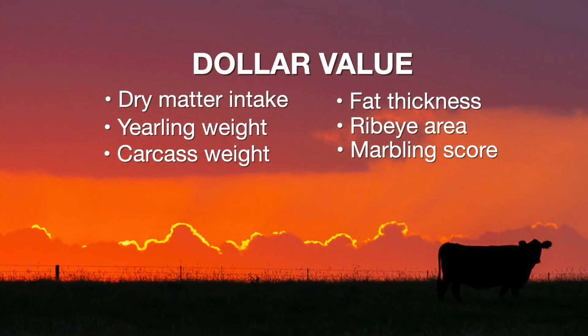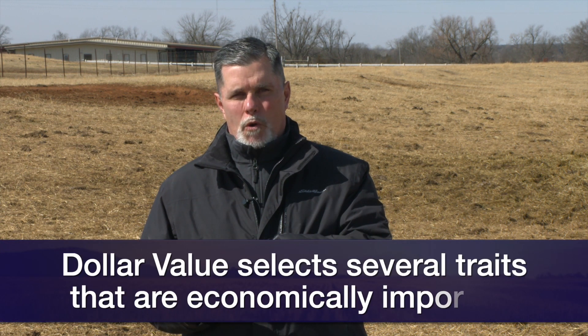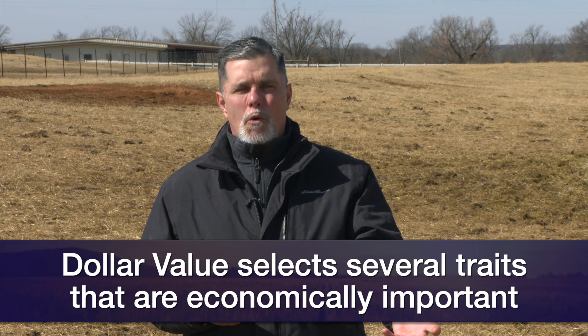The Dollar B value puts an economic weighting on dry matter intake, yearling weight, carcass weight, fat thickness, ribeye area, and marbling score, and that economic weighting gets distilled down to a dollar value. So if we compare two bulls — say one has a Dollar B of 225 and one has a Dollar B of 200 — that $25 difference indicates the additional value we should see in his offspring if we are going to market those as fed cattle on a carcass value basis. Dollar values permit us to select for several things that we know are economically important relative to a specific marketing endpoint or breeding goal.